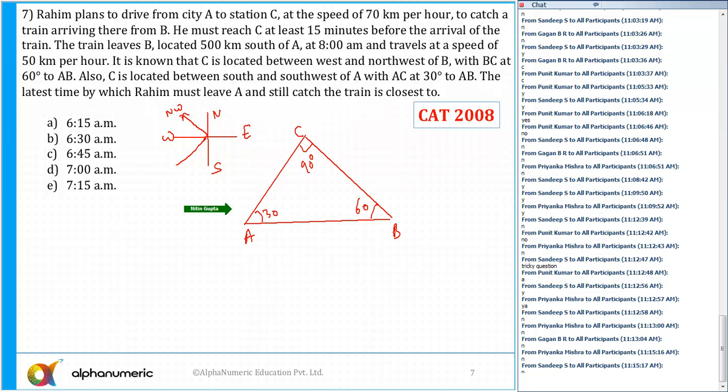We know the figure is a right angle triangle. Rahim is traveling from A to C at a speed of 70 kilometers per hour. He must reach C at least 15 minutes before the arrival of the train. The train is located 500 kilometers south of A and starts from B at 8 AM, traveling at a speed of 50 kilometers per hour.